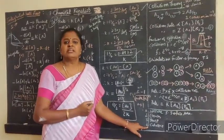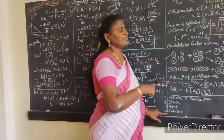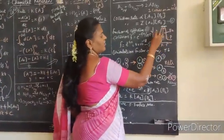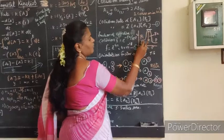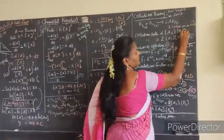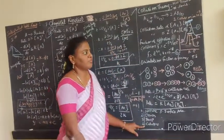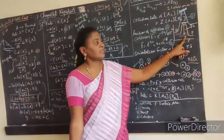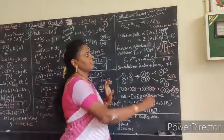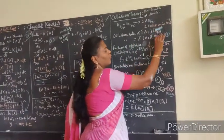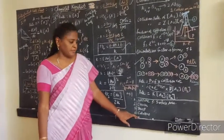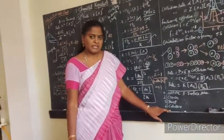And then catalyst. With catalyst and without catalyst, we can compare. With catalyst, the activation energy EA is reduced. Without catalyst, the EA is higher. So the rate of the reaction with catalyst will be more, because the activation energy is reduced. That is the benefit of using a catalyst in a chemical reaction.